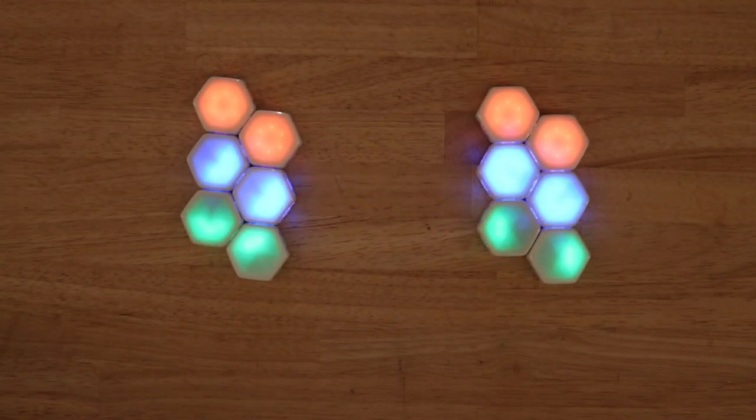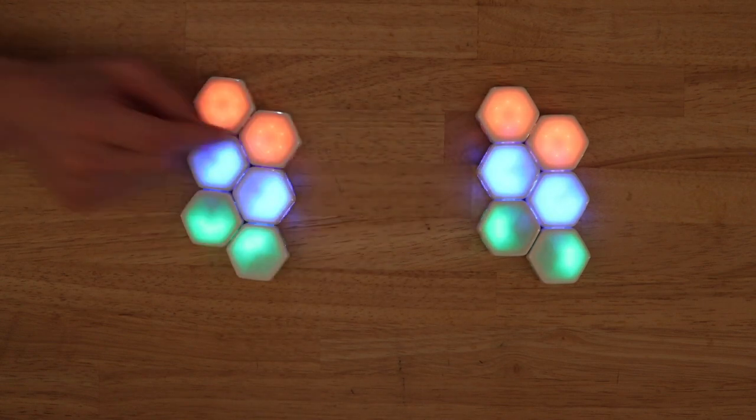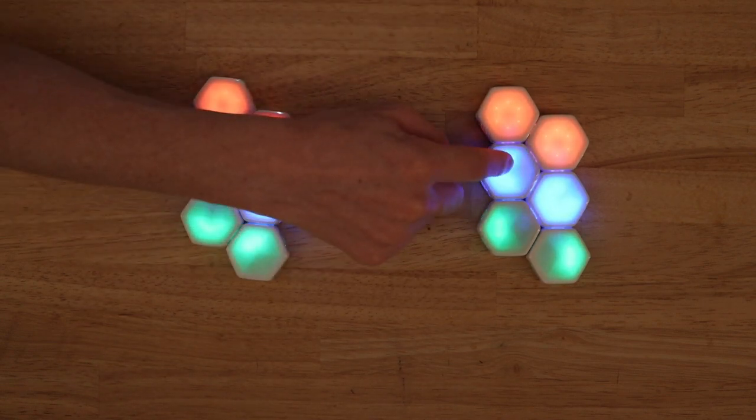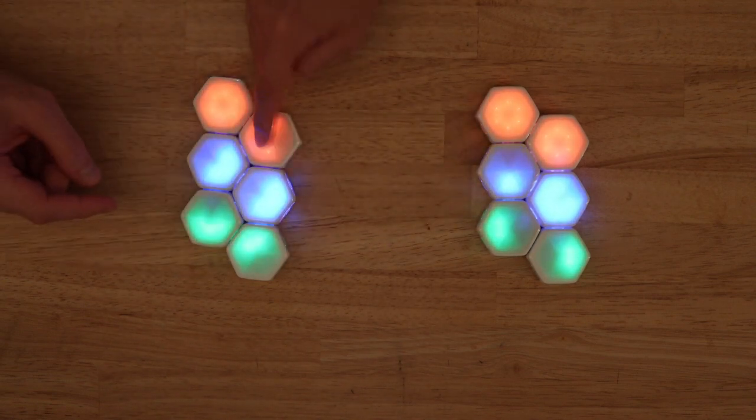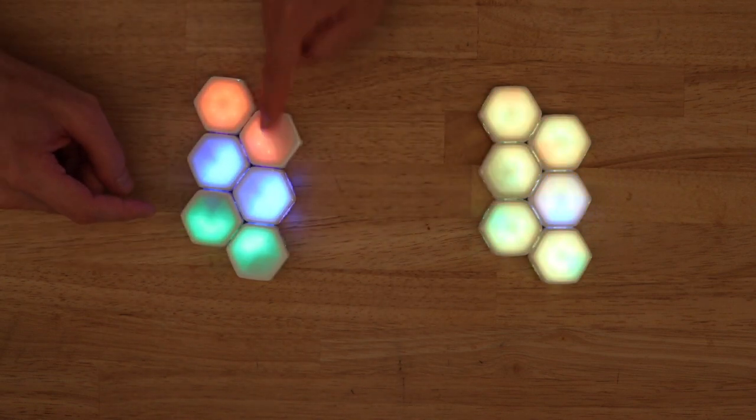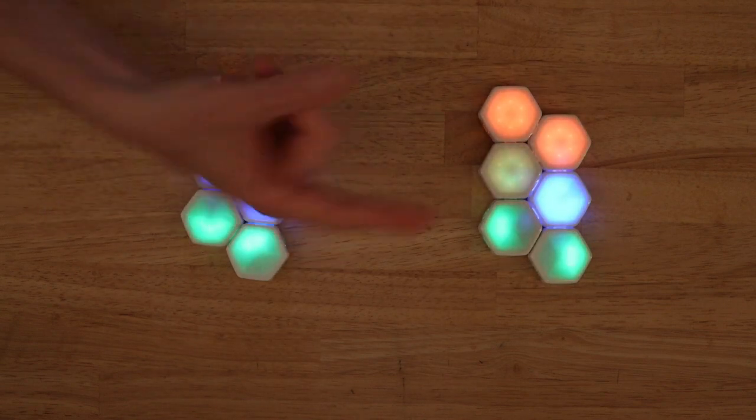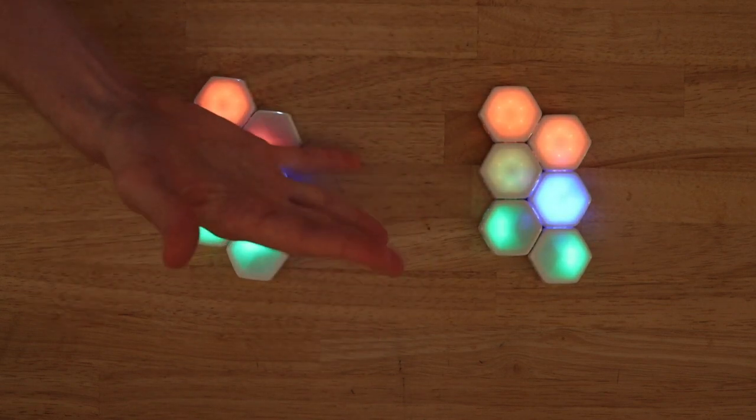On each player's turn, they take one of two actions. They can attack by single clicking any balloon in their opponent's cluster to reduce its health by one. When a balloon is reduced to zero health, it will pop and reveal if it was a crown, trap, or normal balloon.